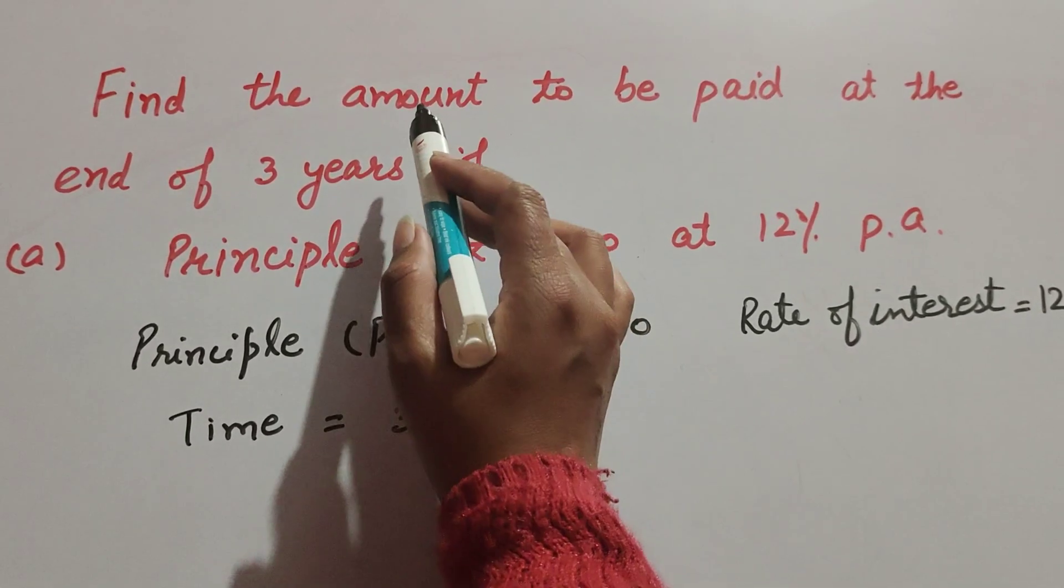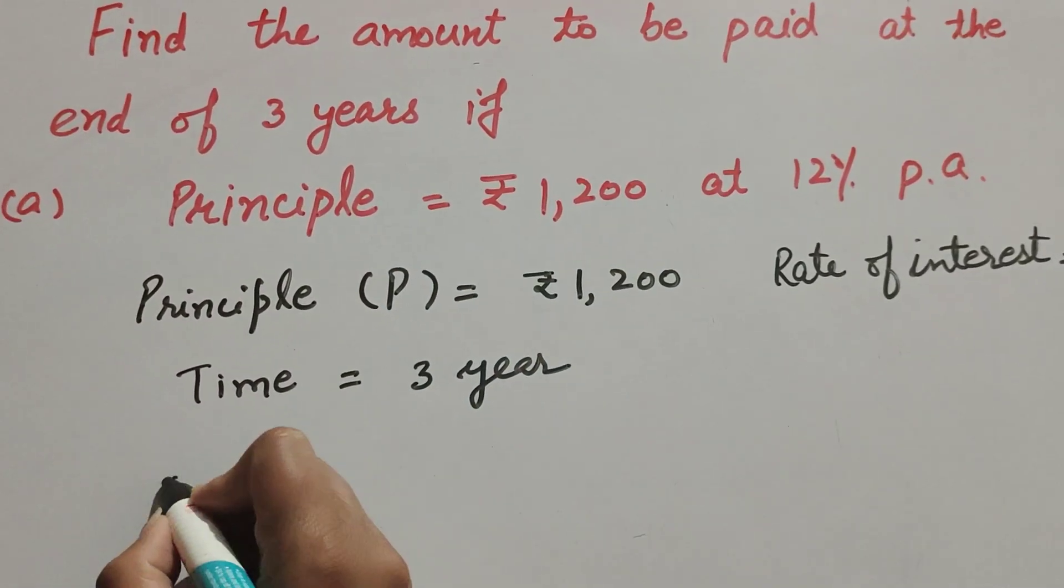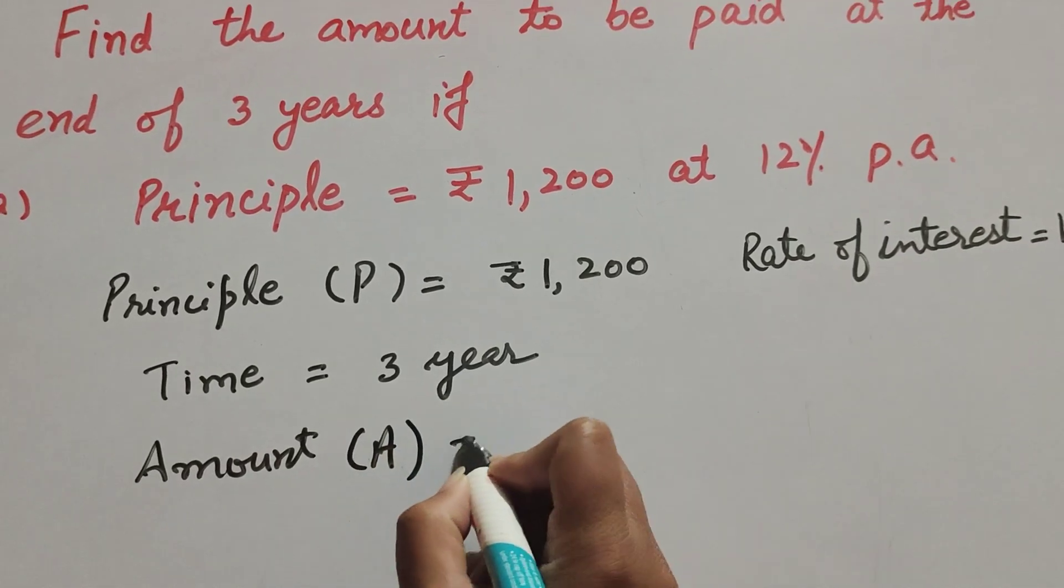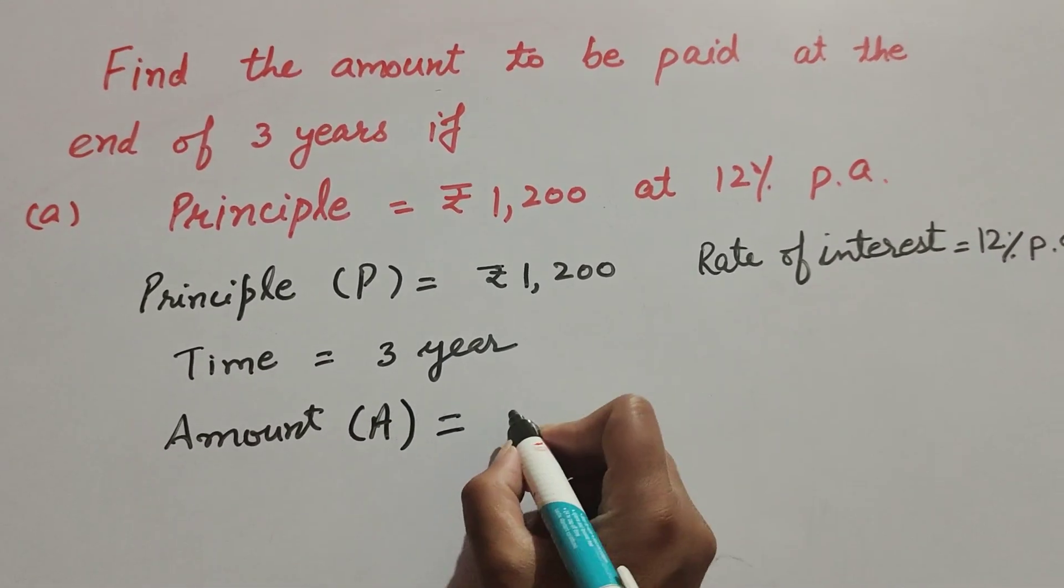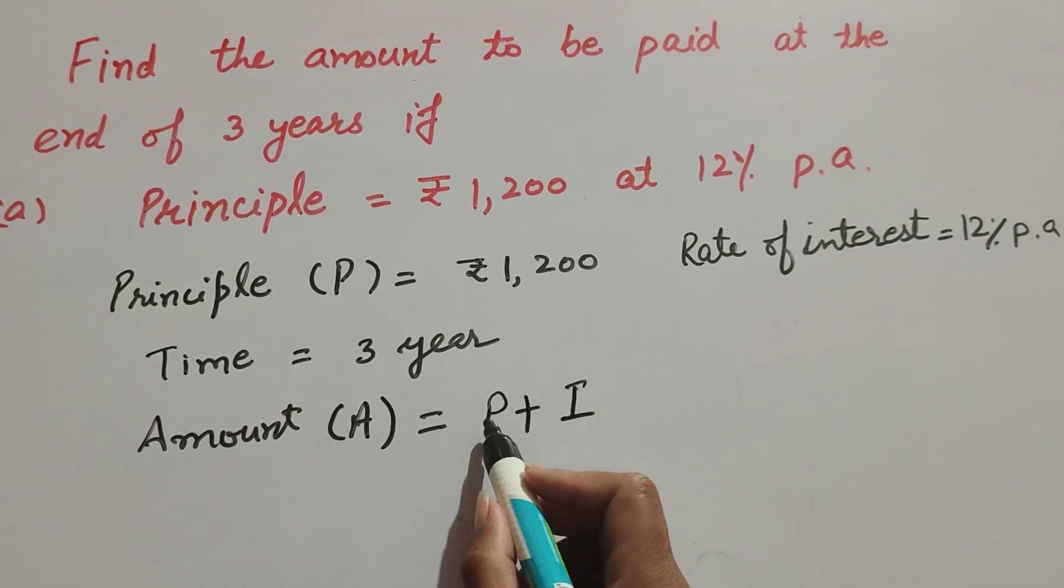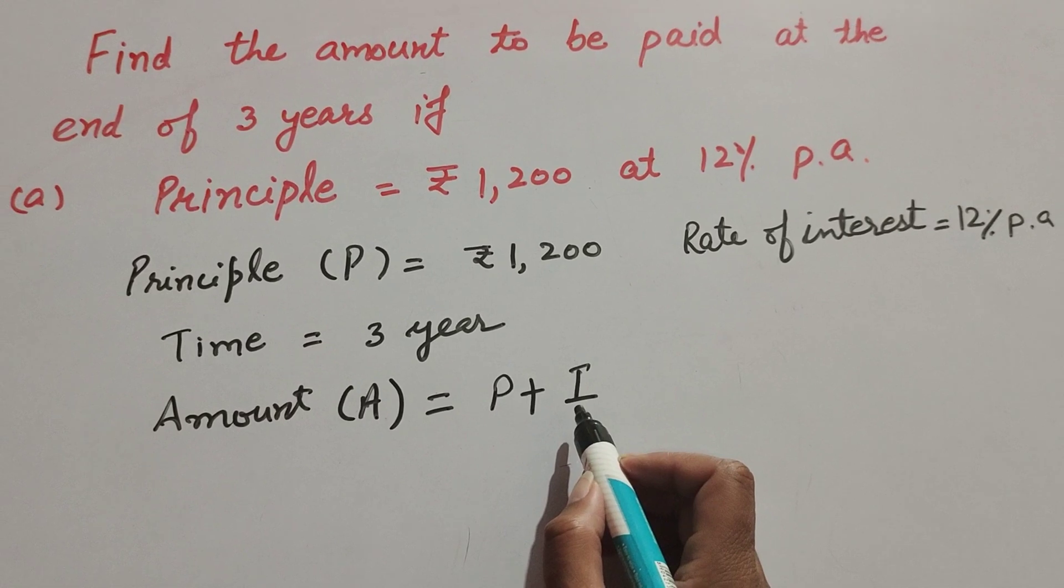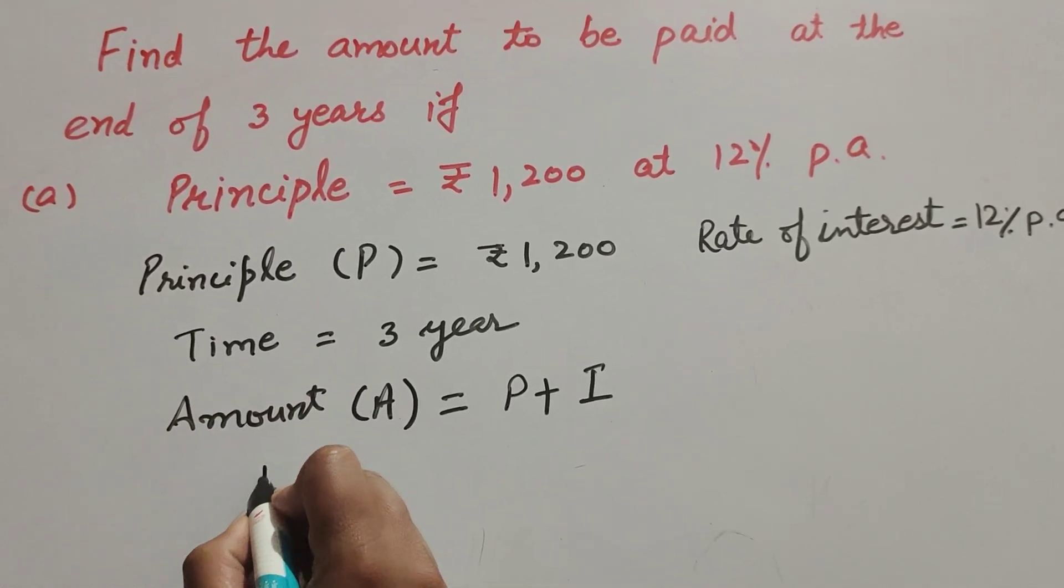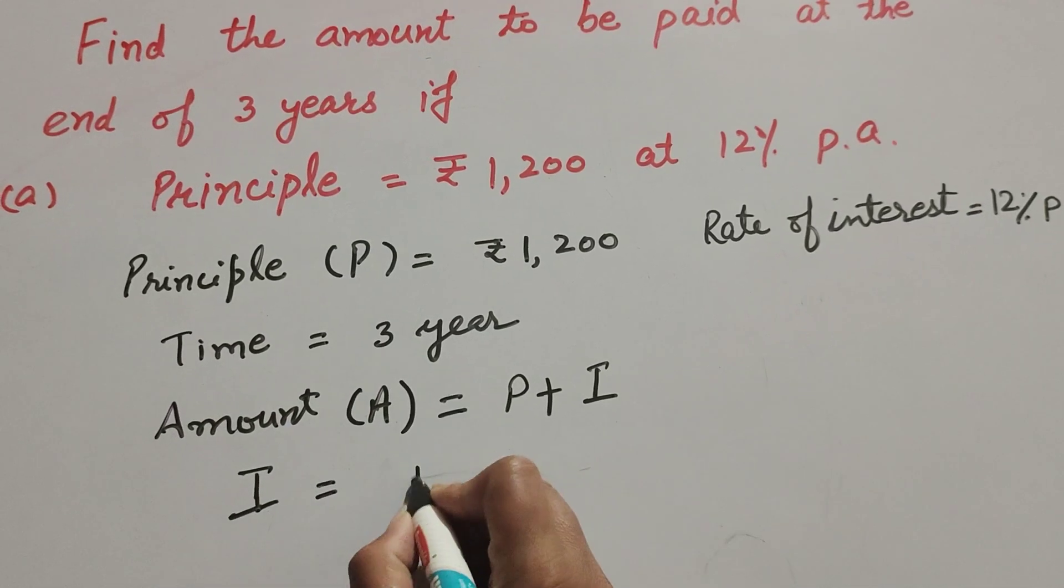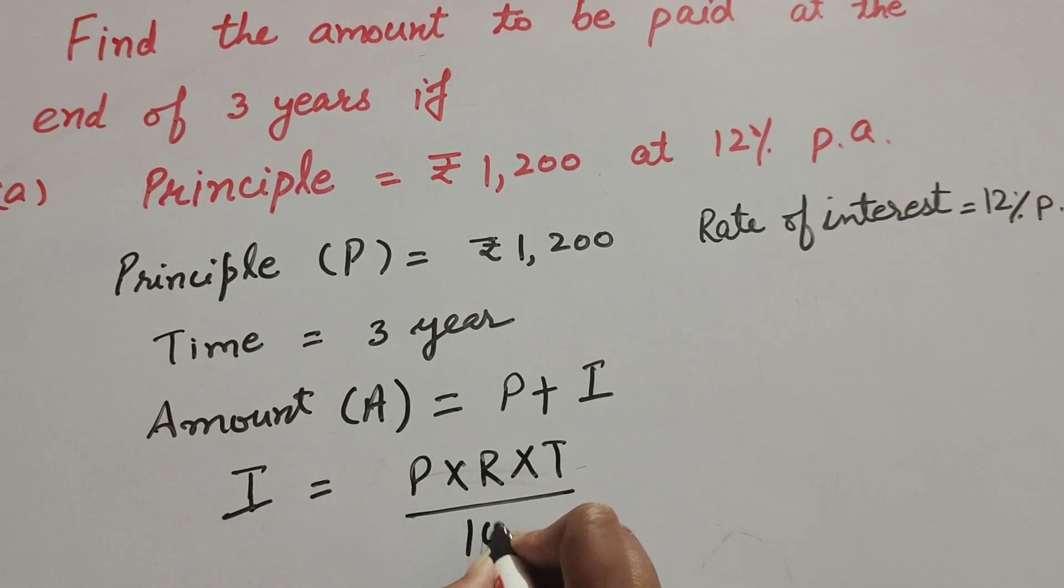And we find amount that to be paid at the end of three years. Amount is equal to principal plus interest. In this, principal is given 1,200, but interest we have to find. So first we find the interest. Interest I is equal to P multiply R multiply T over 100.